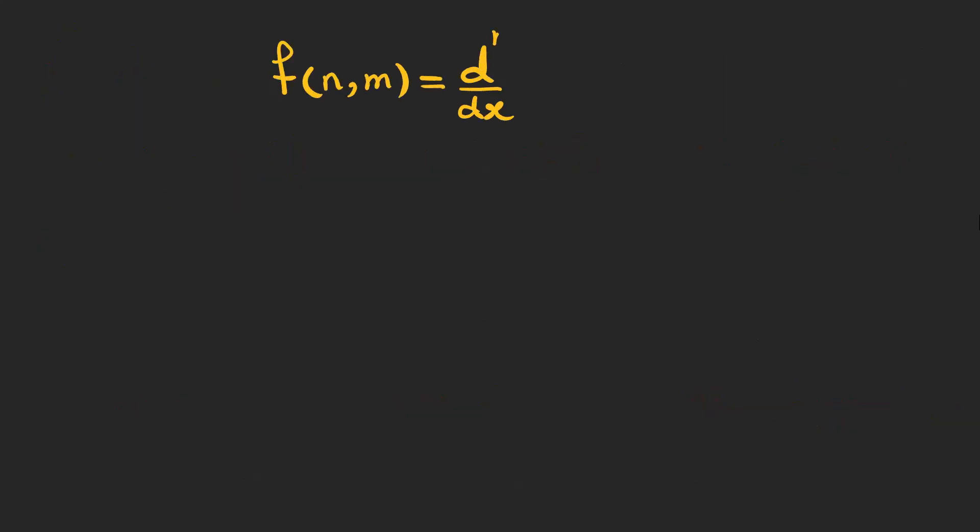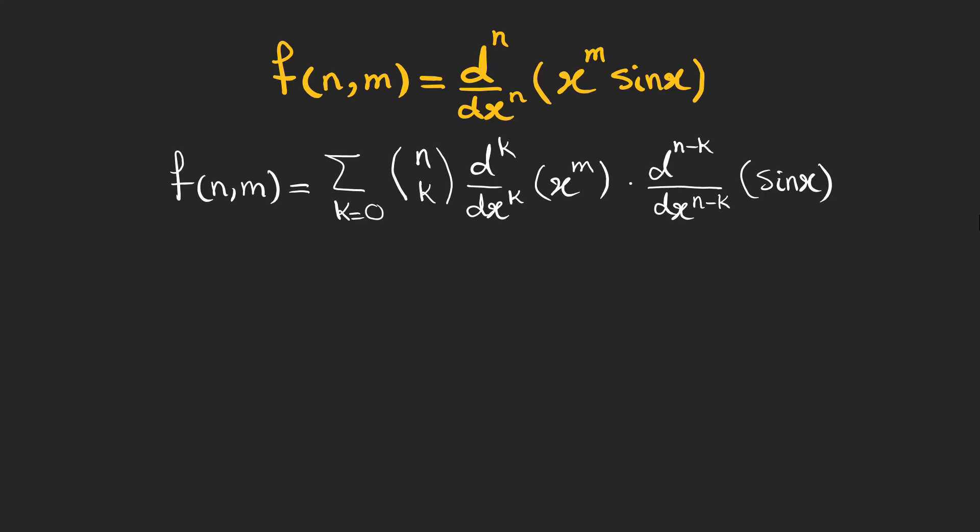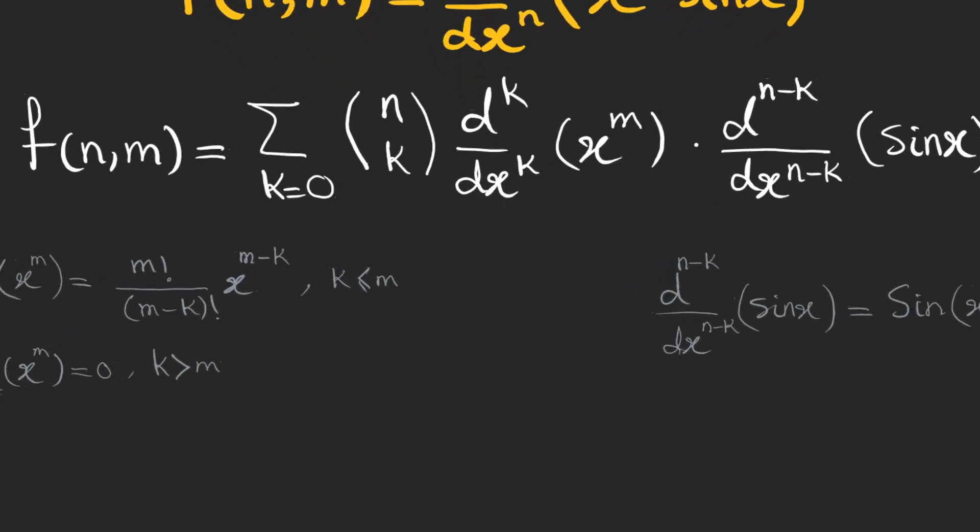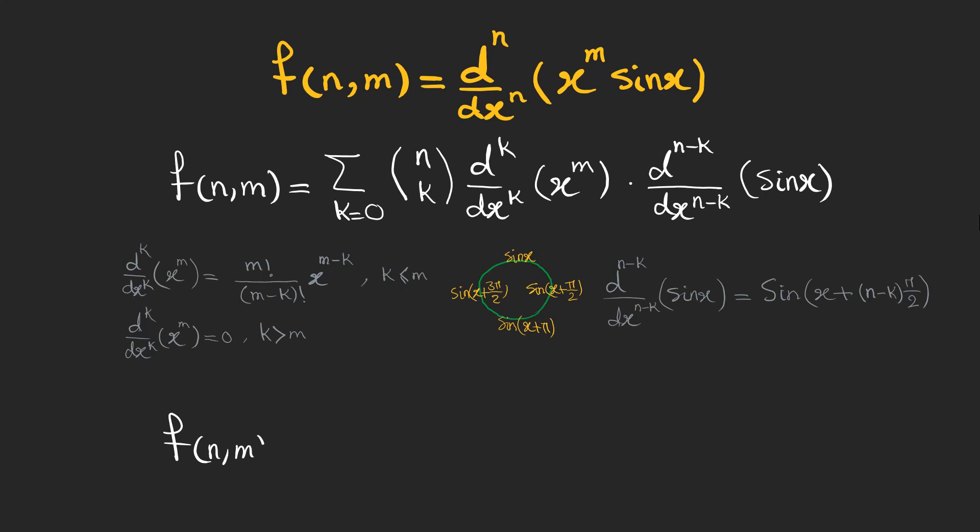Now, let's do something fun and define a function of n and m, and see how it can be useful. We can write it as this sum. The derivative of x to the power of m is this as long as m is bigger than or equal to k. And when k gets bigger, the derivative is 0. And for the derivative of sine of x, we can write it as the sine of x plus a multiple of pi over 2, which satisfy our circular interpretation. So, our final result is this sum, which is a multiplication of x to the power of something and a sine or cosine. Pay attention that the upper limit of the sum is the minimum of m and n. Somehow, n and m control the number of terms we have in the expansion.